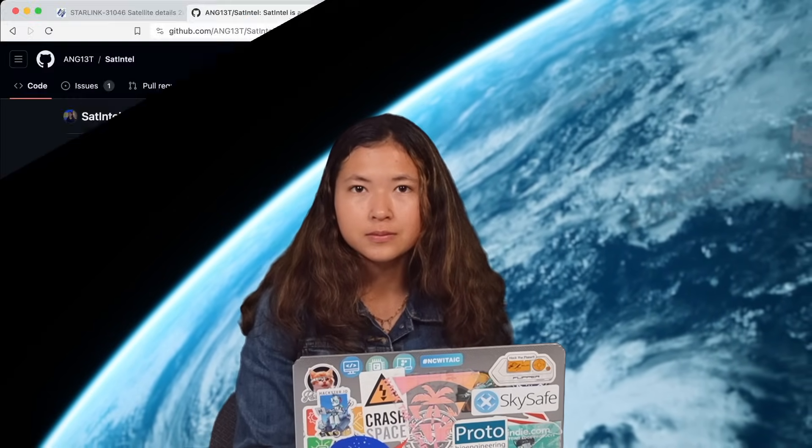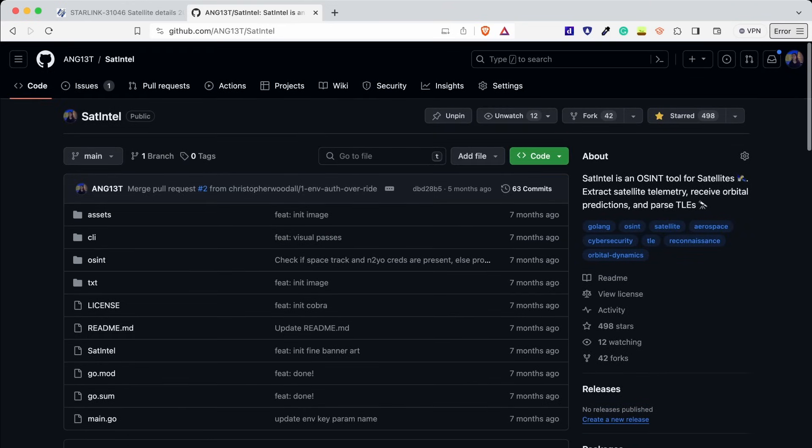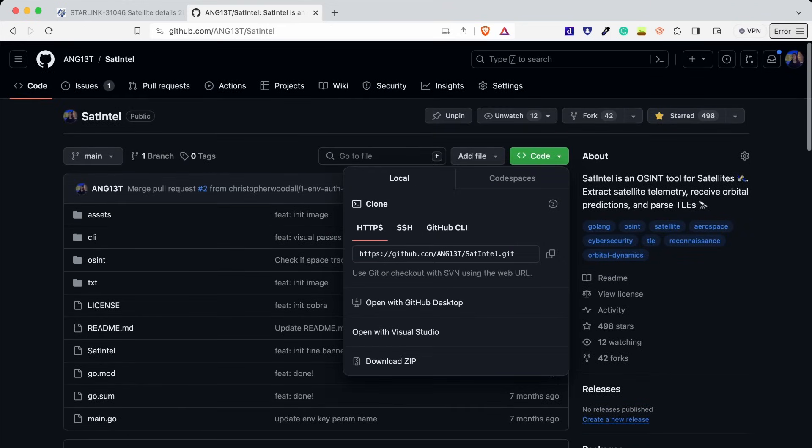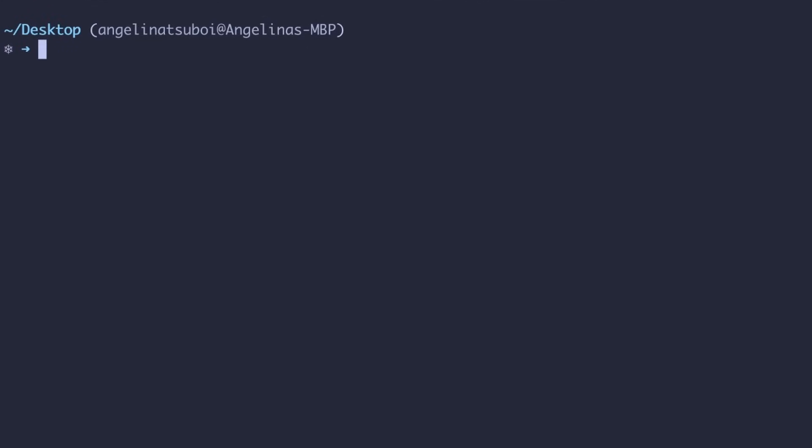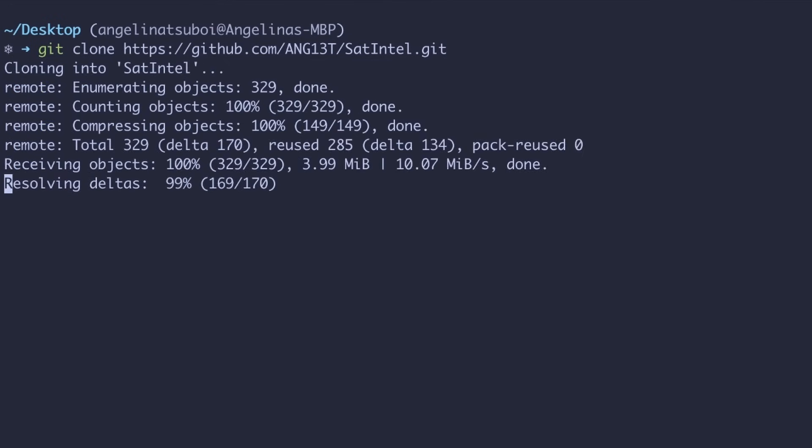In order to make the satellite tracking process more streamlined, I developed an open source tool called Satintel, which provided the international designator or NORAD ID of any artificial satellite, outputs general information about that satellite, orbital elements, and pass prediction times. To use Satintel, you can visit the GitHub repository at this link, and then you can scroll down to look at the details of the repository. To clone it, click code and copy the URL to clipboard.